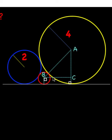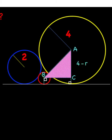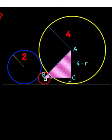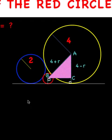Now let's focus on this right triangle ABC. The length of leg AC is the radius of the yellow circle minus the radius of the red circle, so we have the expression 4 minus R. That is because line BC is parallel to the white line, forming a rectangle here, and so opposite sides are equal. Then the length of side AB is the sum of the radius of the yellow circle plus the radius of the red circle, so we have 4 plus R.